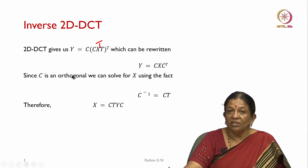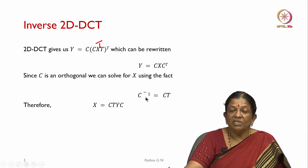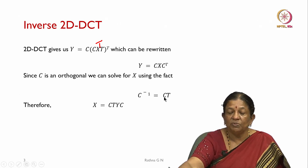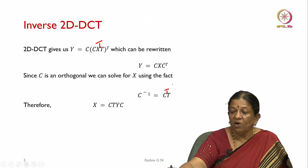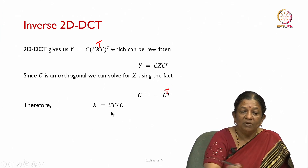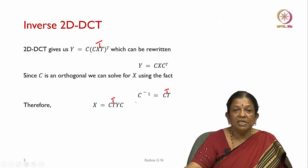Since C is an orthogonal matrix, as we had seen in the last class, we can solve for X using the fact that C inverse is equal to C transpose, which we showed because of the orthogonal property. Therefore, X will be equivalent to C transpose into Y into C.